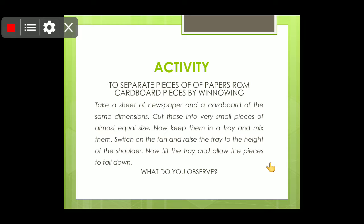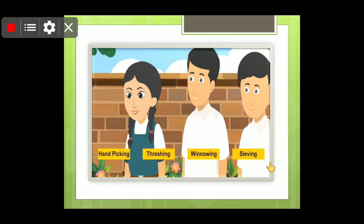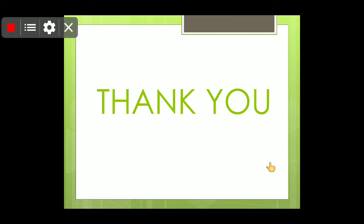The same method is used by farmers to clean their grains and in homes as well. You will observe that pieces of cardboard fall closer to you than the paper. So now you are able to answer the four types of separation methods: hand picking, threshing, winnowing, and sieving. These methods are used to separate solids from solids. Thank you for listening — please perform this activity at home and go through the video again.